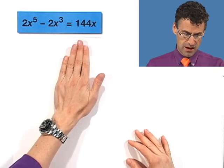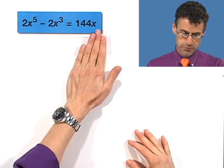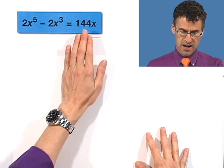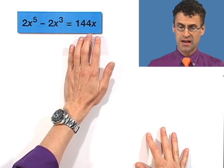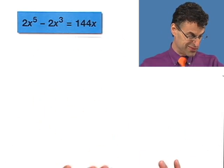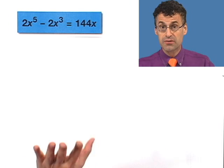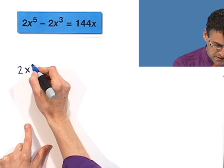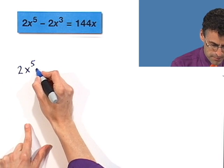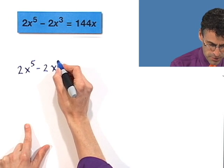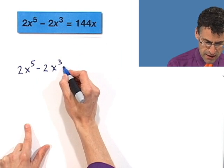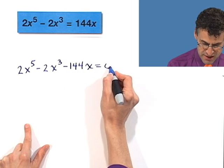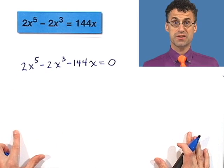This is not quite equal to zero. I'm going to take this 144x and bring it to the other side by subtracting 144x from each side. I'm going to get a zero here, and the other side will have lots of stuff. We're going to have 2x to the fifth minus 2x cubed, and now I'm subtracting 144x, and that equals zero. This is the equivalent equation to the first one.